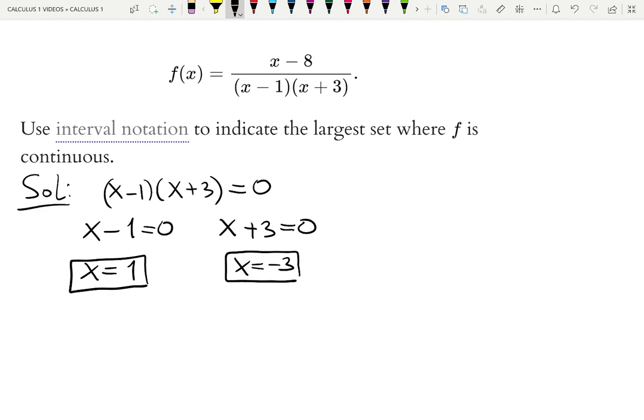Those are basically bad points, and by bad points, I mean points of discontinuities. Actually, those are vertical asymptotes. How do we write down the domain of this function, or basically the largest set where f is continuous?